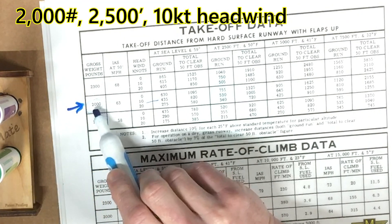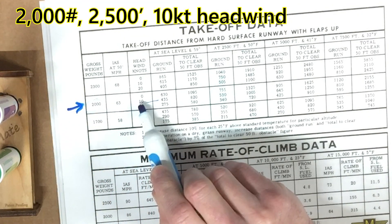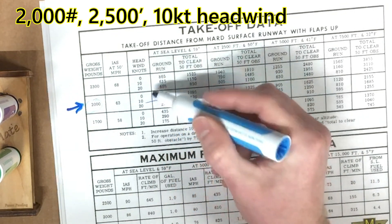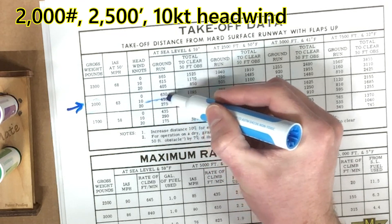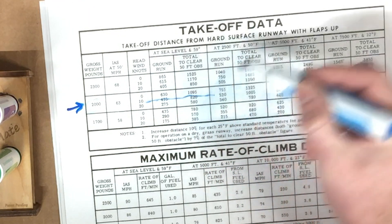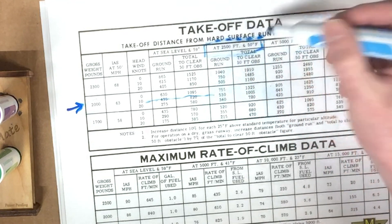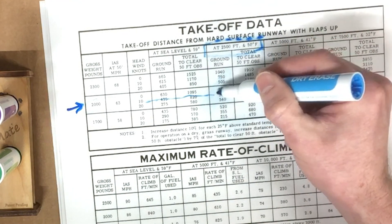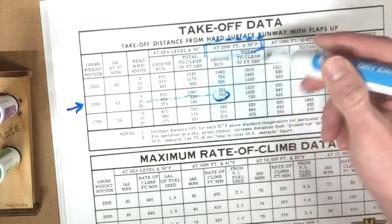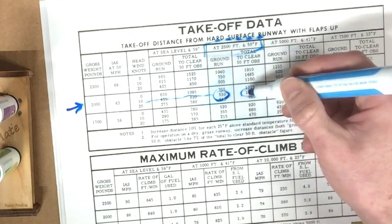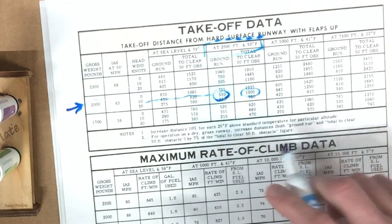So you can see here, we're at 2,000 pounds. Then we're going to move over. Here's the headwind column. There's three for 0, 10, and 20. We're in the 10. We're going to go over to here. This box is for 2,500 feet elevation. So our ground run is 530 feet and our total distance to clear a 50-foot obstacle is only 1,000 feet. This thing's going to get off the ground real quick.